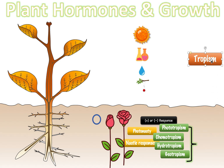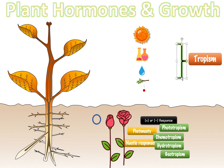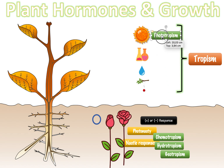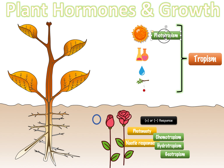Tropism is growth towards a stimulus. Some examples are the ones I put here. The sun — light is a stimulus. It doesn't have to be the sun; if you do an experiment and just put a light, you'll notice the plant will grow towards that light. This is called phototropism, because it's growing towards the light.